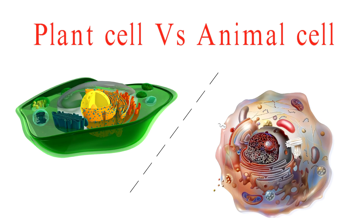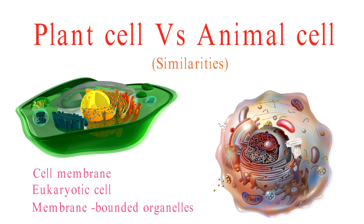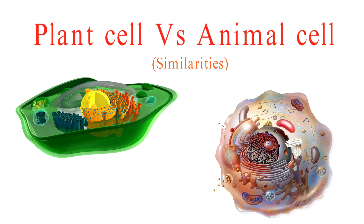Let's begin with the similarities that both plant and animal cells share. Both plant and animal cells have a plasma membrane, a protective barrier controlling what enters and exits the cell. Both of these cells are classified as eukaryotic. At their core, each cell features a nucleus that is protected by a nuclear envelope, housing the cell's genetic material.